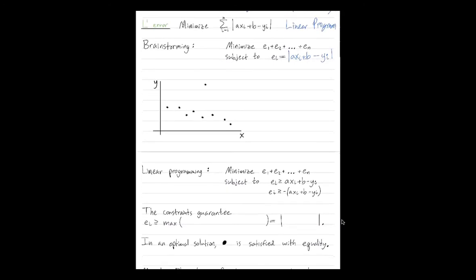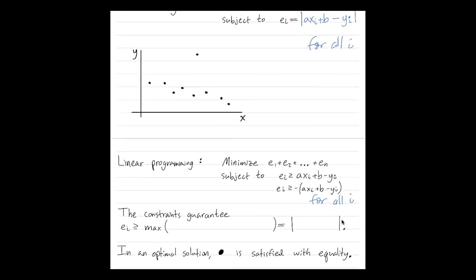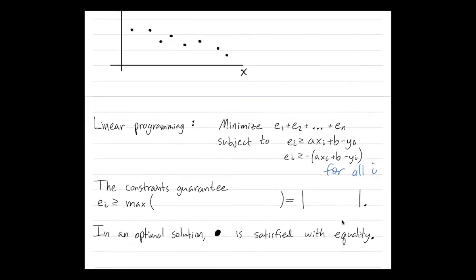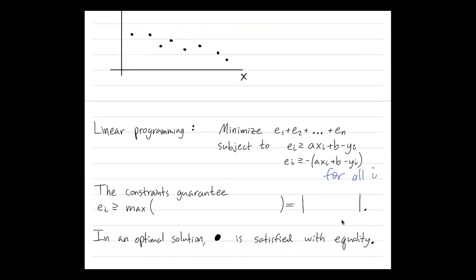We haven't yet written our constraints in a linear format. And the problem is these absolute values. So I'm going to show you how to get rid of those absolute values. So let's actually move past our brainstorming and go to the actual linear program. The actual linear program, we minimize the sum of errors. Each single constraint, which has to hold for all i, we're now going to split into two. And these are for all i, for all data points i. Let's examine our constraints.